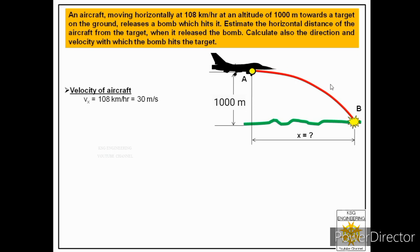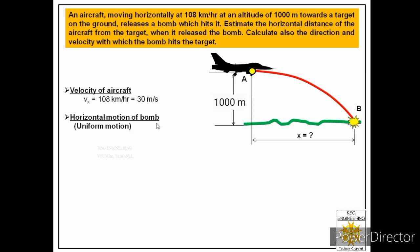Whenever we deal with projectile motion we consider two types of motions: horizontal motion and vertical motion of the projectile. The horizontal motion of the projectile is a uniform motion because it is without the effect of gravity. The vertical motion of the projectile is under the effect of gravity, so we consider that as uniformly accelerated motion. Let us consider these motions one by one, starting with horizontal motion of the bomb, which is uniform motion. For uniform motion only one equation is applicable: x = x₀ + vx·t.